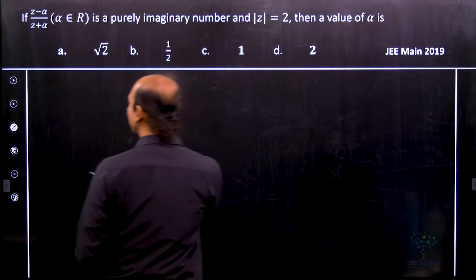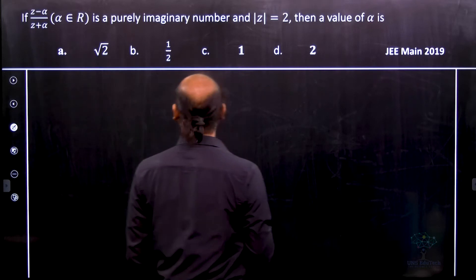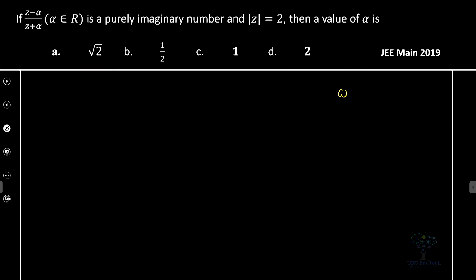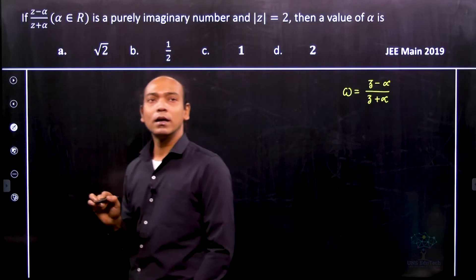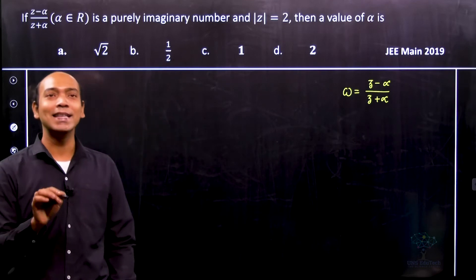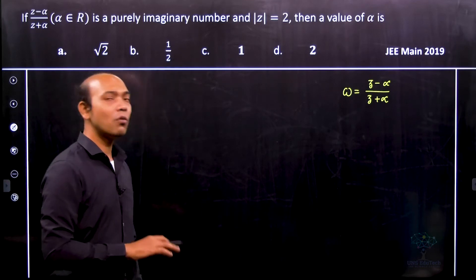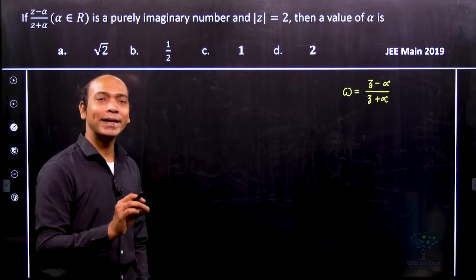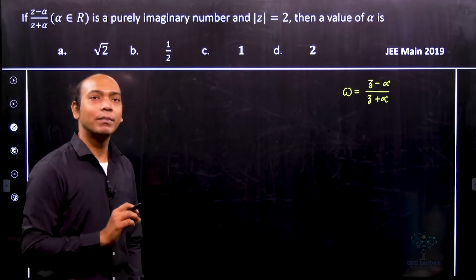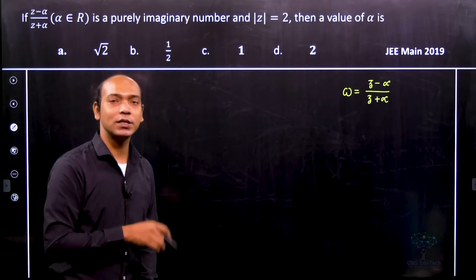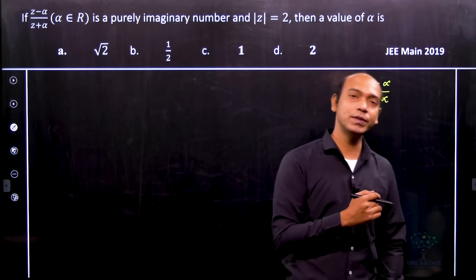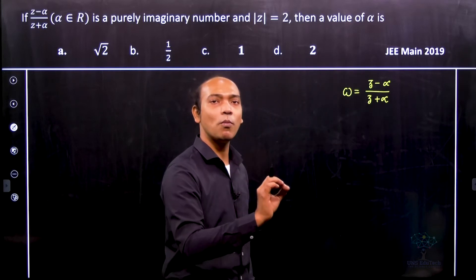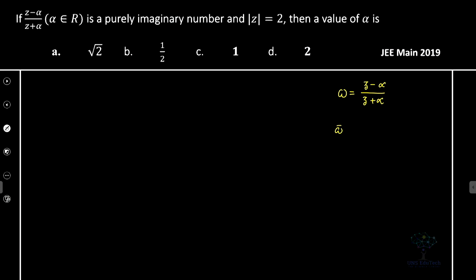First, we consider the given complex number and call it omega, which equals (z + α)/(z - α). In this problem, remember that alpha is a real number — that is given. Now, since omega is purely imaginary, we use the condition omega plus omega-bar equals zero.